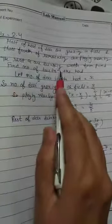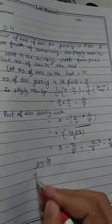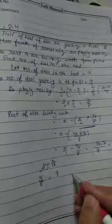Now according to question, what does it say? The rest of the nine are drinking water. These are drinking water. So x upon 8 is equal to 9. Implies x is equal to 9 into 8, that is equal to 72.